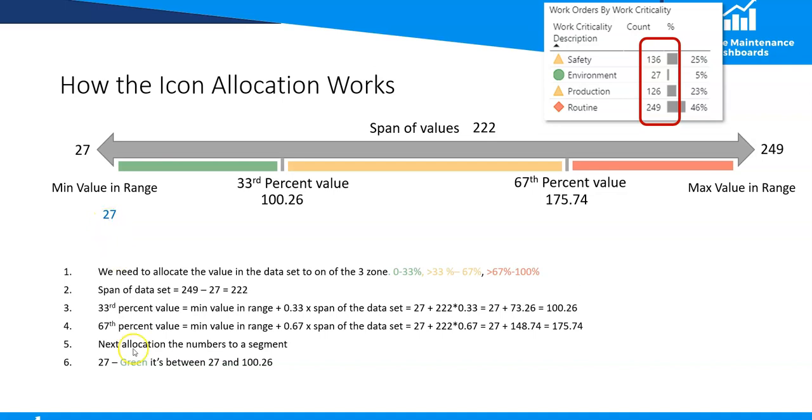So 27, that's easy because that is green because it's the lowest value and it will always be in the green because we are starting from the lowest value which is green and working up to the highest value. Red is the highest value so it will always be red. If we use this percentage allocation technique for allocating the icons there will always be a green and always be a red and they will always be the lowest and highest value.